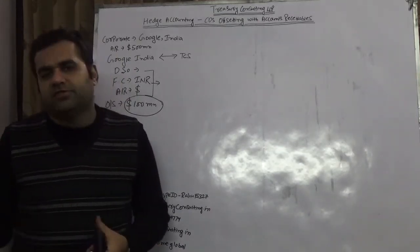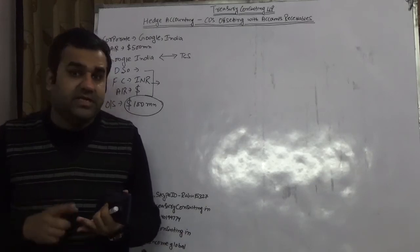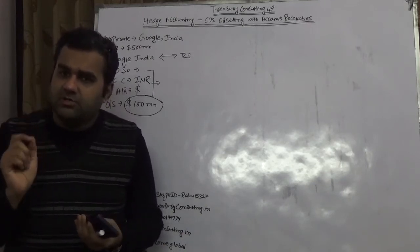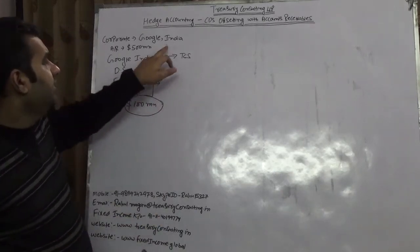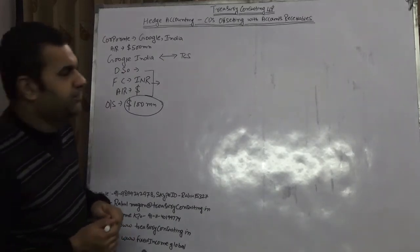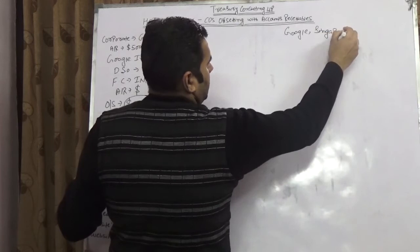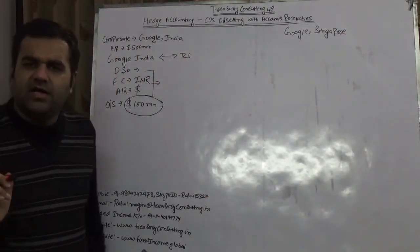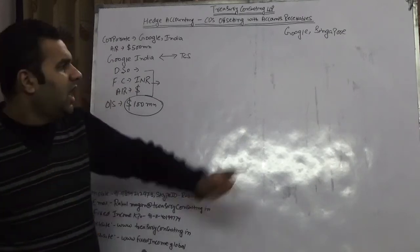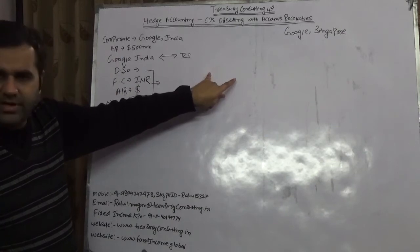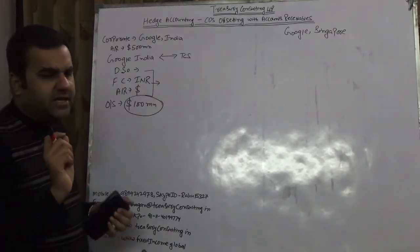Google India would have a lot of options: CDS single name, CDS multi name, CDS single trigger, CDS multi trigger, first-to-default swap, nth-to-default swap, and total return swap. The purpose of using Google India as an example is clear — Google has a subsidiary in Singapore, which is Google Singapore. Taking a CDS in India is like finding a needle in a haystack; there is a 99% probability you will not find it. So Google Singapore would be playing two roles for Google India.